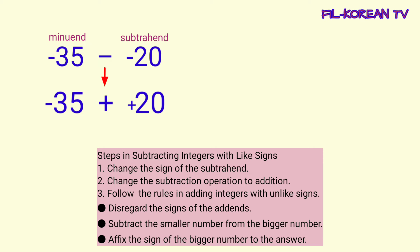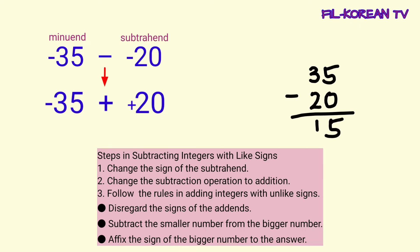At ang titignan lamang natin ay yung numbers. Ngayon, yung maliit na number, i-minus natin sa malaking number. Dito sa problem natin, yung 20 ay mababa kaysa sa 35. Kaya, i-minus natin ang 20 sa 35. 35 minus 20 equals 15.